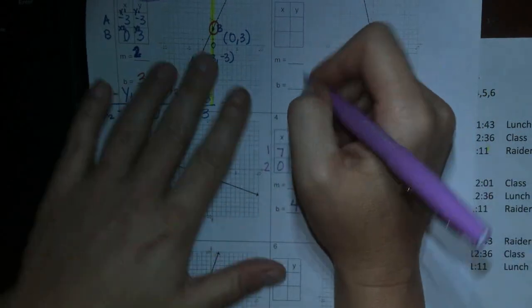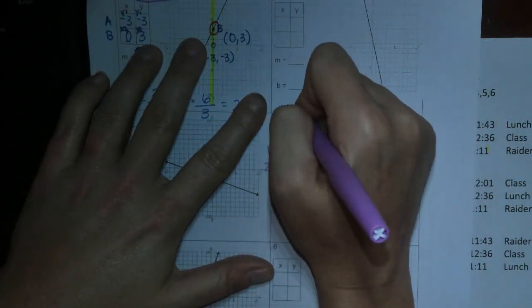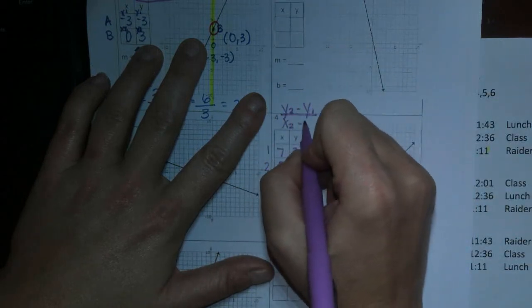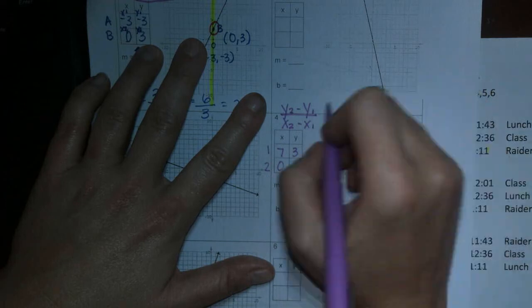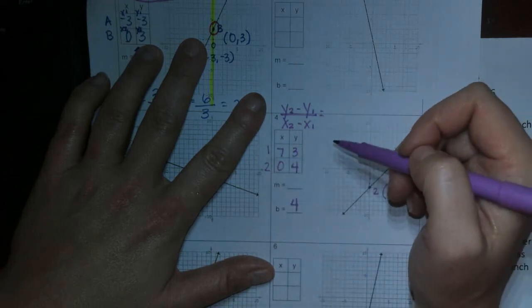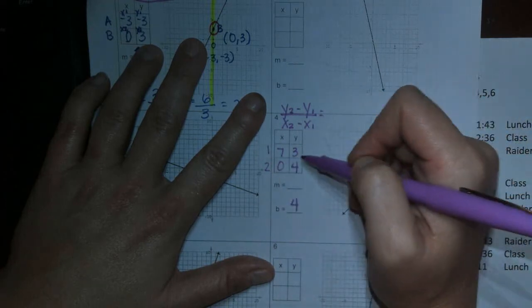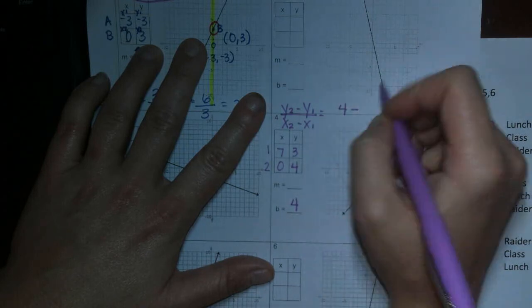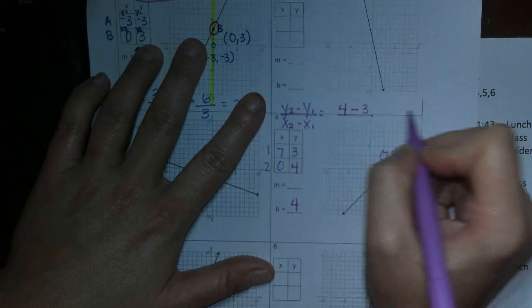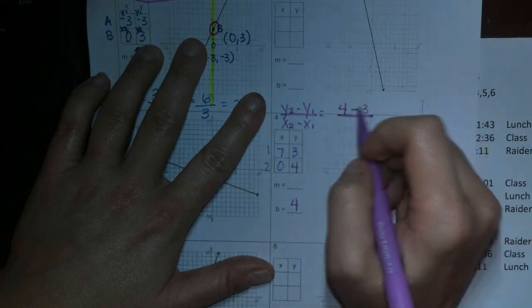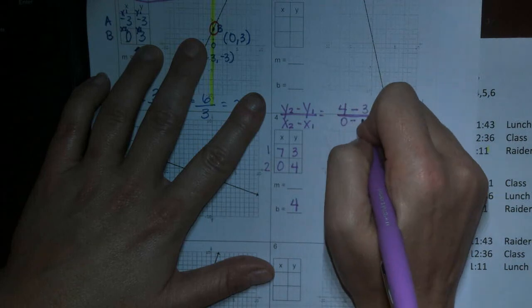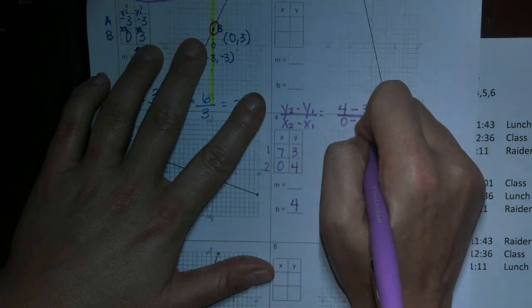So now, let's see here. y2 minus y1 over x2 minus x1. y2, 4, minus y1, 3, over x2, 0, minus x1, 7.